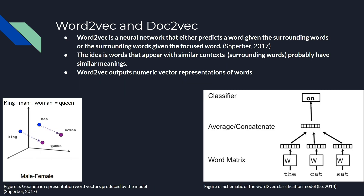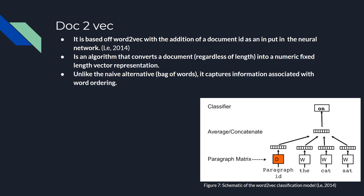Another technique we used for pre-processing the essays was Doc2Vec. To understand Doc2Vec we must first understand Word2Vec. Word2Vec is a neural network that predicts a word given the surrounding words or vice versa. The idea is that words that appear in the same context have similar meanings, and we can use the weights from the neural network to form word vectors, which can have numeric operations performed on them. Doc2Vec uses the same idea as Word2Vec but adds a document ID vector to the neural network input. We chose Doc2Vec because, unlike other alternatives, it captures information with word ordering and word placement and can handle documents of different lengths.